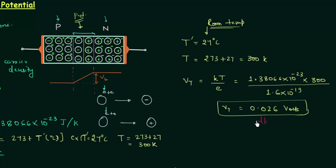Now let's solve the numerical problem. We have a silicon PN junction at room temperature, so V_T = 0.026 volts. It is doped at N_A = 10¹⁶ per cm³, N_D = 10¹⁷ per cm³, and the intrinsic carrier density N_I = 1.5 × 10¹⁰ per cm³. We have to calculate the built-in potential V_B.